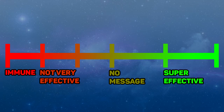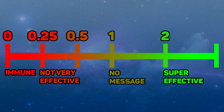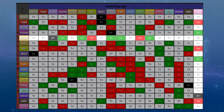Type refers to if the move is super effective, resisted, or anything else. This value can be 0, 0.25, 0.5, 1, 2, or 4, depending how the move matches up against the opposing Pokemon in terms of type matchup. In this case, Earthquake is neutral against the Fairy Pokemon Sylveon, so the value is 1.